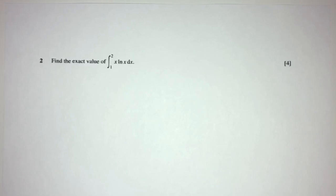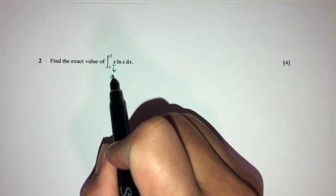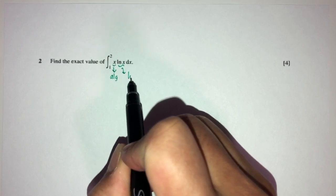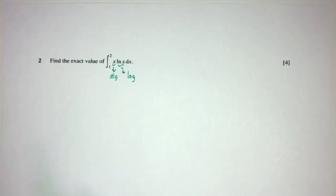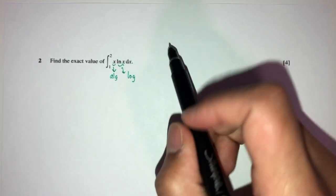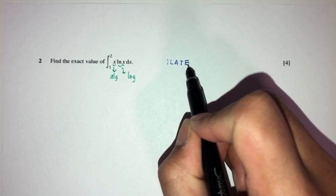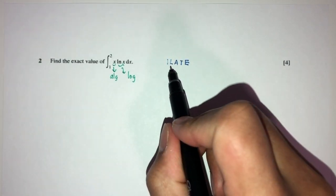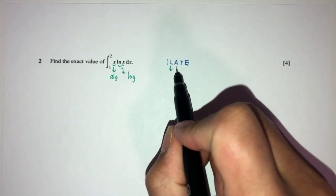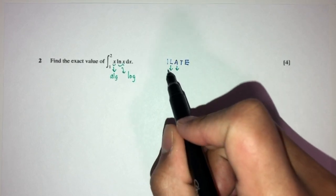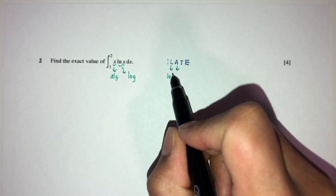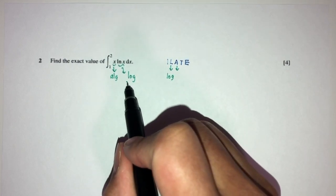Now let's move on to question number 2. We have to find the exact value of this integration. We can observe this is an algebraic function multiplied by a logarithm function — two different types. So we'll be using integration by parts. We have to follow the ILAT rule. The first one here is log, which is the inverse/logarithm category, and this is algebra. L comes first in ILAT, so log comes first.